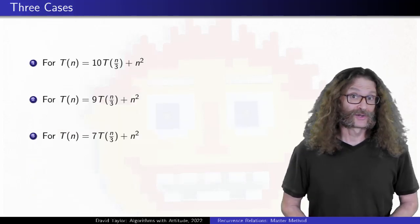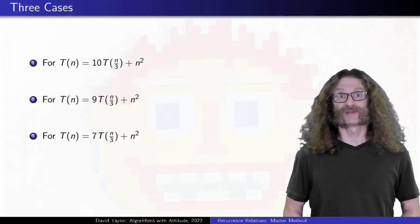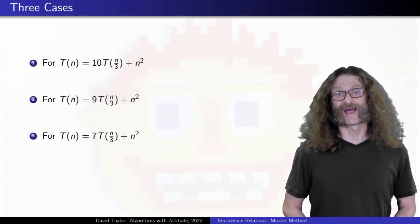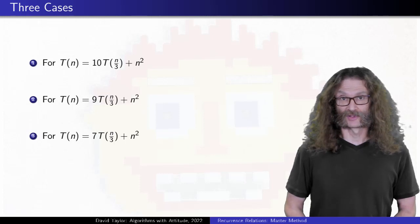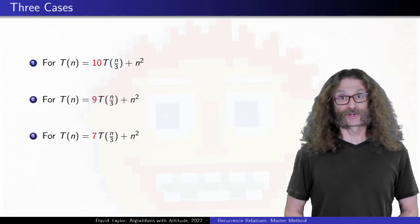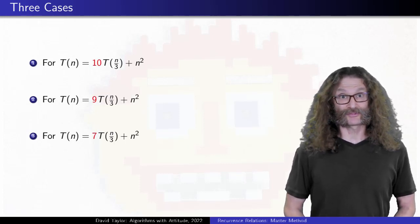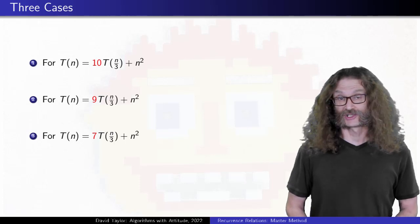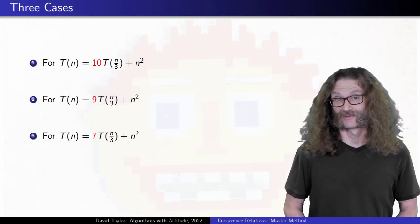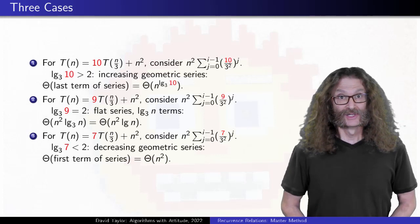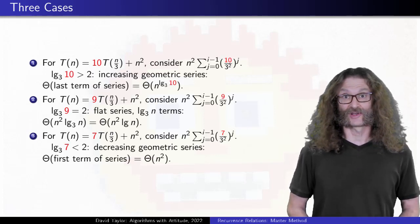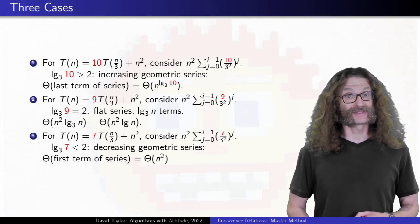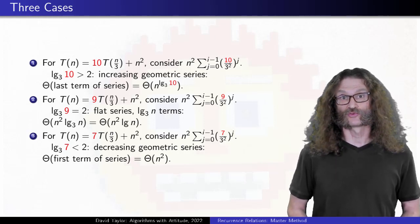The previous video gave us three similar looking examples and how to manipulate them to figure out their asymptotic growth. Here they are in reverse order from the previous video. The recurrences are all the same except that the first coefficient is either 10, 9, or 7. In the analysis from that video, to analyze each case, we expanded the recursion and saw a series. The big difference came from what series we saw.